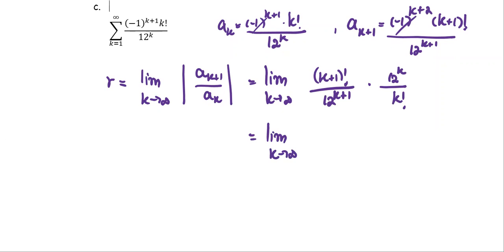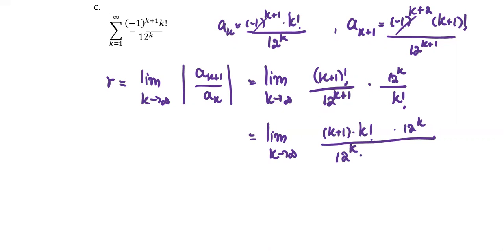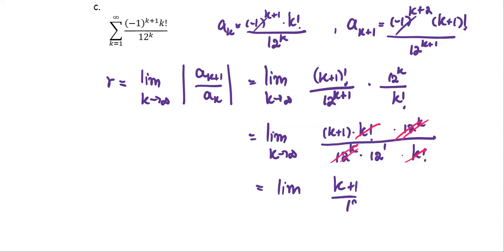We simplify: k plus 1 factorial is the same as k plus 1 multiplied by k factorial, and 12 to the power k plus 1 is the same as 12 to the power k multiplied by 12 to the first power. Canceling the common factors — k factorial with k factorial, and 12 to the power k with 12 to the power k — we are left with the limit of k plus 1 divided by 12.